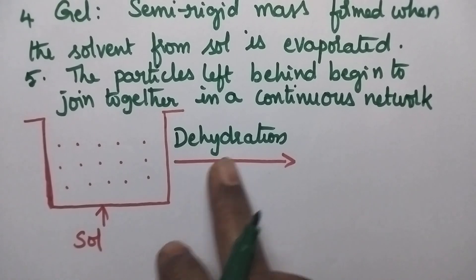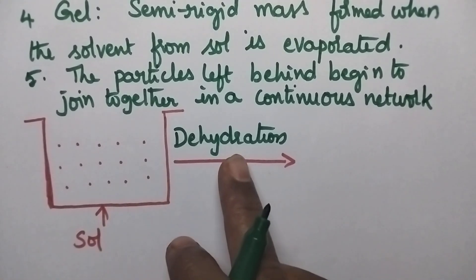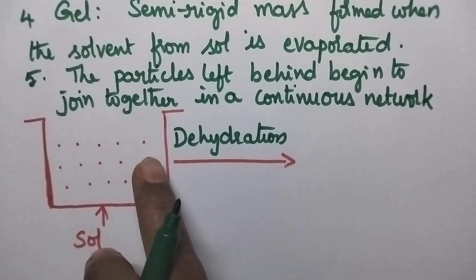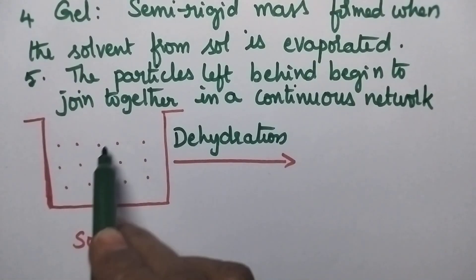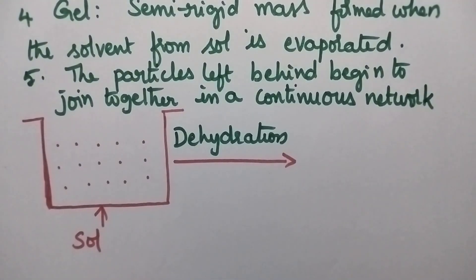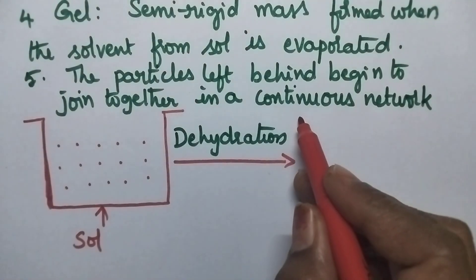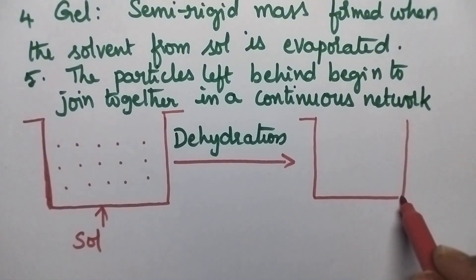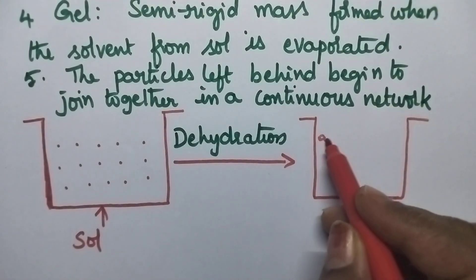So whenever a colloidal solution is dehydrated then what happens? The solvent undergoes evaporation with the result all the particles present in the colloidal solution will start forming a continuous network like structure. And that can be called as a Gel.